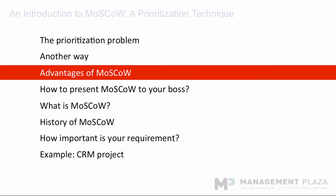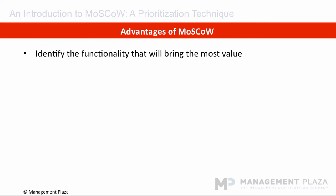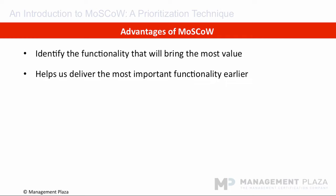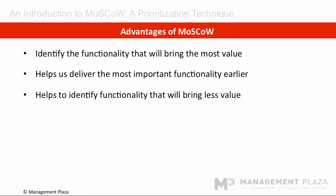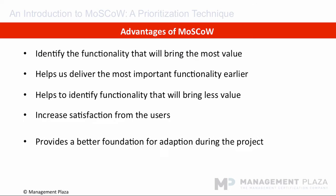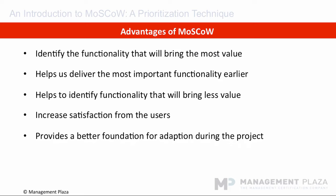I will now introduce you to the advantages of Moscow. Moscow helps us to identify the functionality that will deliver the most value and therefore must be delivered for the software application to work as expected. It helps to deliver the most important things first and therefore get a quicker return on investment as the solution will be delivered incrementally and users can start using it sooner. It also helps to identify functionality that will bring less value and can be delivered later if necessary, or not at all. This increases user satisfaction as they can see the most important requirements being addressed and can start using the software application much quicker. It also provides a better foundation for adaptation as users continue to give feedback during the project so the application will work as expected.